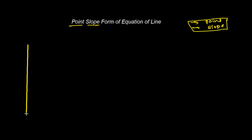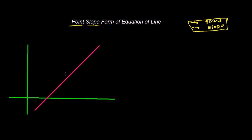Let me make a rough diagram. Suppose this is my y-axis and this is my x-axis. I have a line — this is my line. In this line, there is a permanent point P whose coordinate is (x0, y0), and the slope of this line L is m.